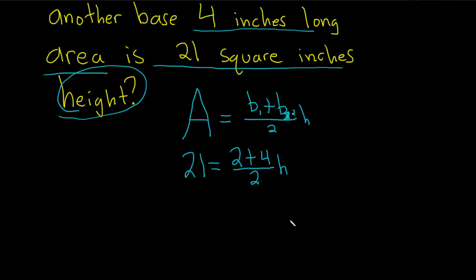So we have 21 equals two plus four is six, so we get six over two times h. 21 equals six over two is three, so we get three times h.